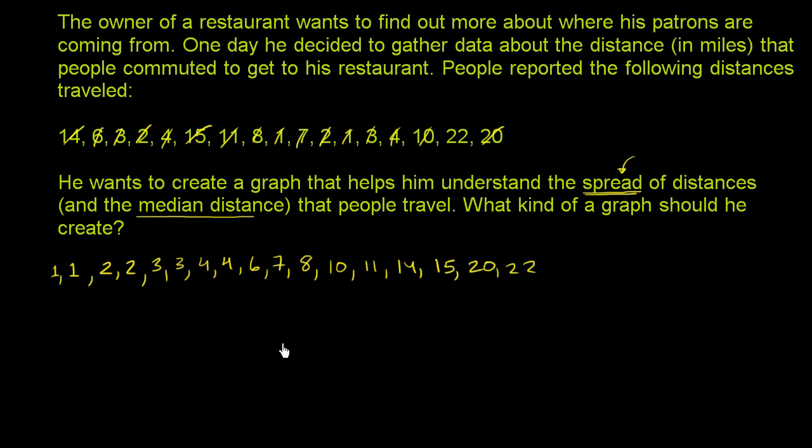So we've ordered all our data. Now it should be relatively straightforward to find the middle of our data, the median. So how many data points do we have? 1, 2, 3, 4, 5, 6, 7, 8, 9, 10, 11, 12, 13, 14, 15, 16, 17. So the middle number is going to be a number that has 8 numbers larger than it and 8 numbers smaller than it.